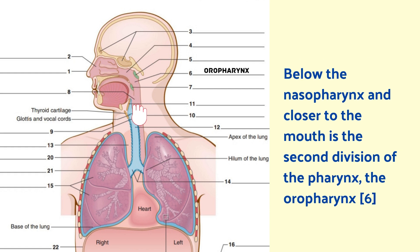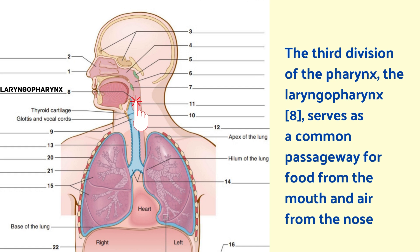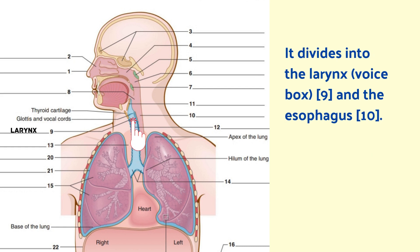Below the nasopharynx and closer to the mouth is the second division of the pharynx, the oropharynx. The palatine tonsils, two rounded masses of lymphatic tissue, are in the oropharynx. The third division of the pharynx is the laryngopharynx. It serves as a common passageway for food from the mouth and air from the nose, and divides into the larynx and the esophagus.